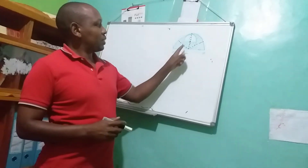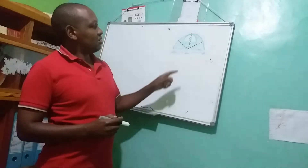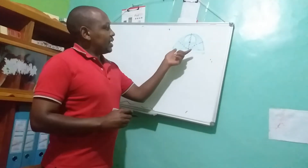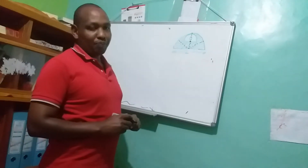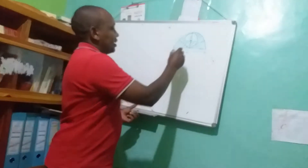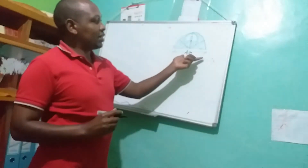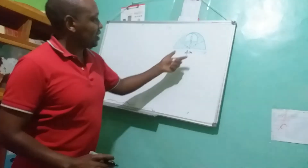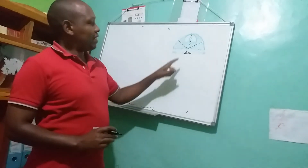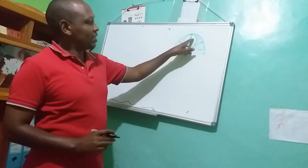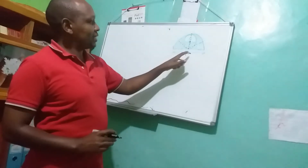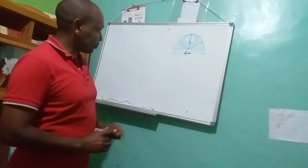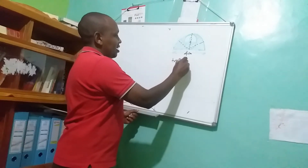Welcome to this video. I'm going to explain how to find the area of the shaded region of this diagram. In this diagram, we have a semicircle, and inside we have a smaller circle with center O. The diameter of the semicircle is 4 centimeters. To solve this problem, we are going to find the area of the entire semicircle, then find the area of the unshaded semicircle inside, and subtract to get the area of the shaded region.